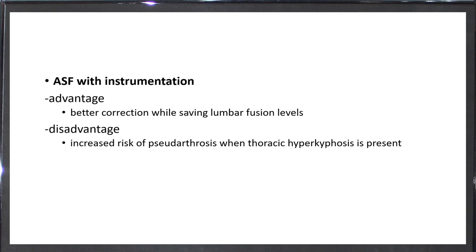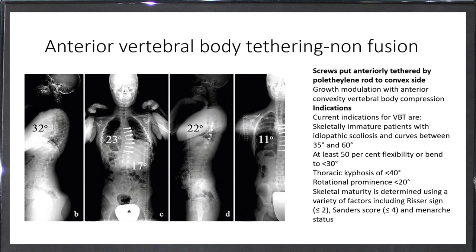We have anterior spinal fusion and instrumentation. It gives better correction, saving more segments from fusion, but increases the risk of pseudarthrosis and increased thoracic hyperkyphosis possibility. There is a technique that's gaining popularity now, which is tethering the convex side. With this anterior approach, either transpleural or retropleural, you put these screws from side to side to the vertebral body, then put a polyethylene tube that connects these screws together and compress this convex side. It's a kind of growth modulation with convex side vertebral body compression, then wait for skeletal maturity and remove your implants.